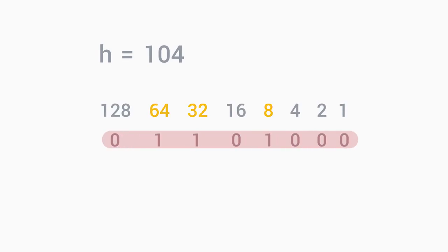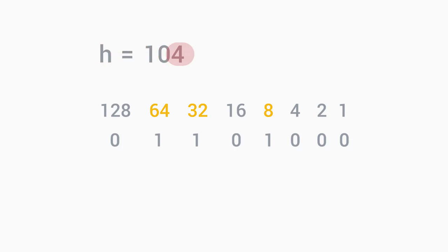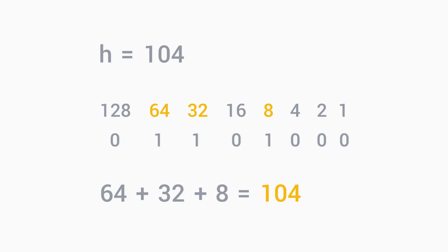Let's look at our ASCII to binary table again. The letter H in binary is 0, 1, 1, 0, 1, 0, 0, 0. Now let's look at an ASCII to decimal table. The letter H in decimal is 104. Now let's try our conversion chart again: 64 plus 32 plus 8 equals 104. Look at that — the math checks out.